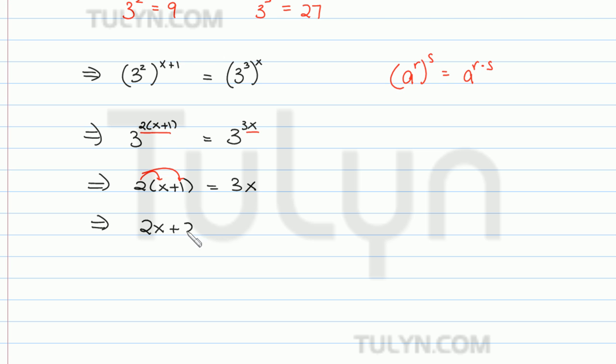We get 2x plus 2 is equal to 3x. And then I'm going to subtract 2x from each side of the equation.